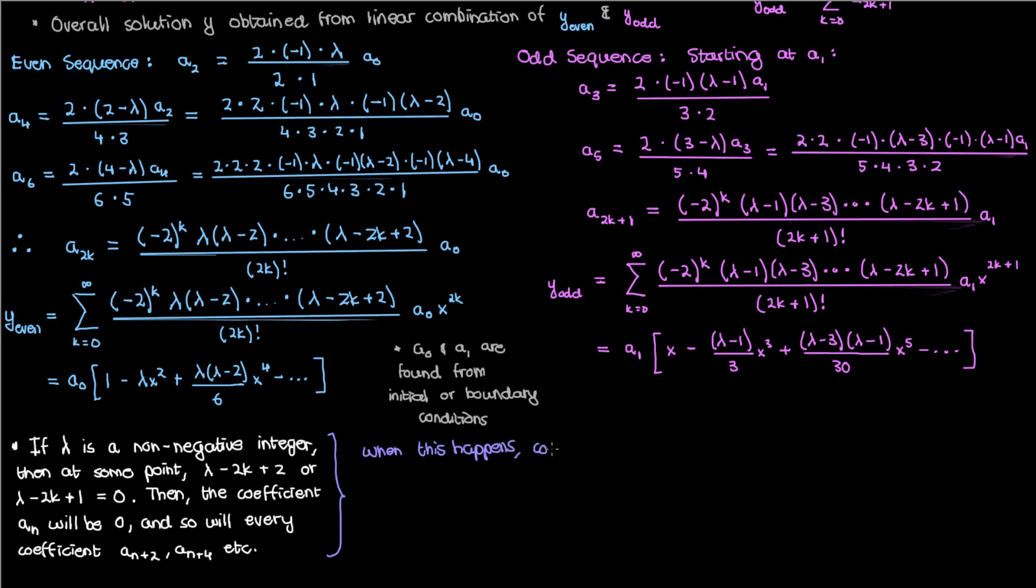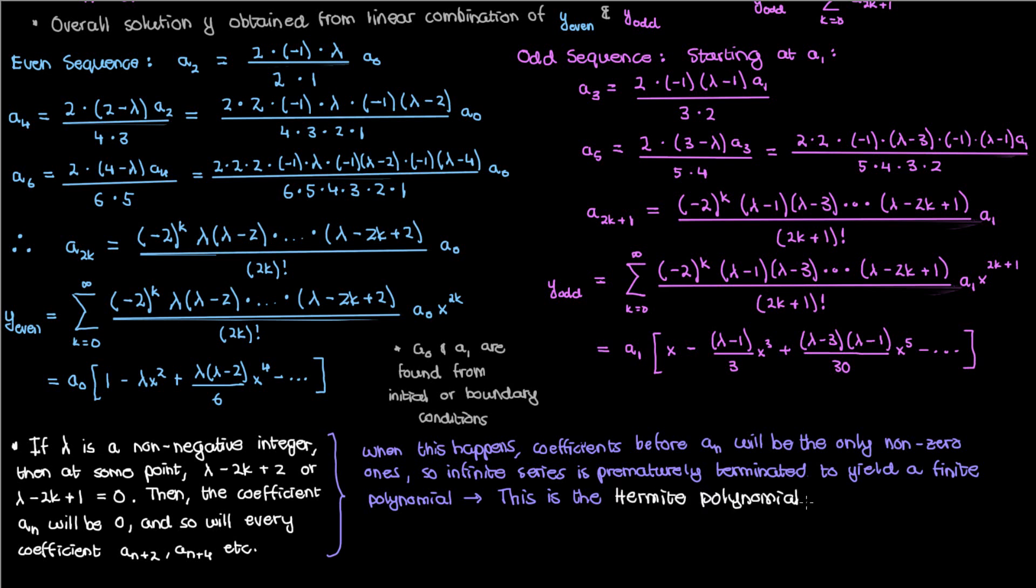And then when this happens, all the coefficients before a_n will be the only ones that are non-zero. So instead of having an infinite series containing the sum of a bunch of polynomial terms, we'll have a finite polynomial series because our infinite series was prematurely terminated. And this finite polynomial that we end up with because of having an integer λ, this finite polynomial is called a Hermite polynomial, the polynomial solution to the Hermite differential equation.